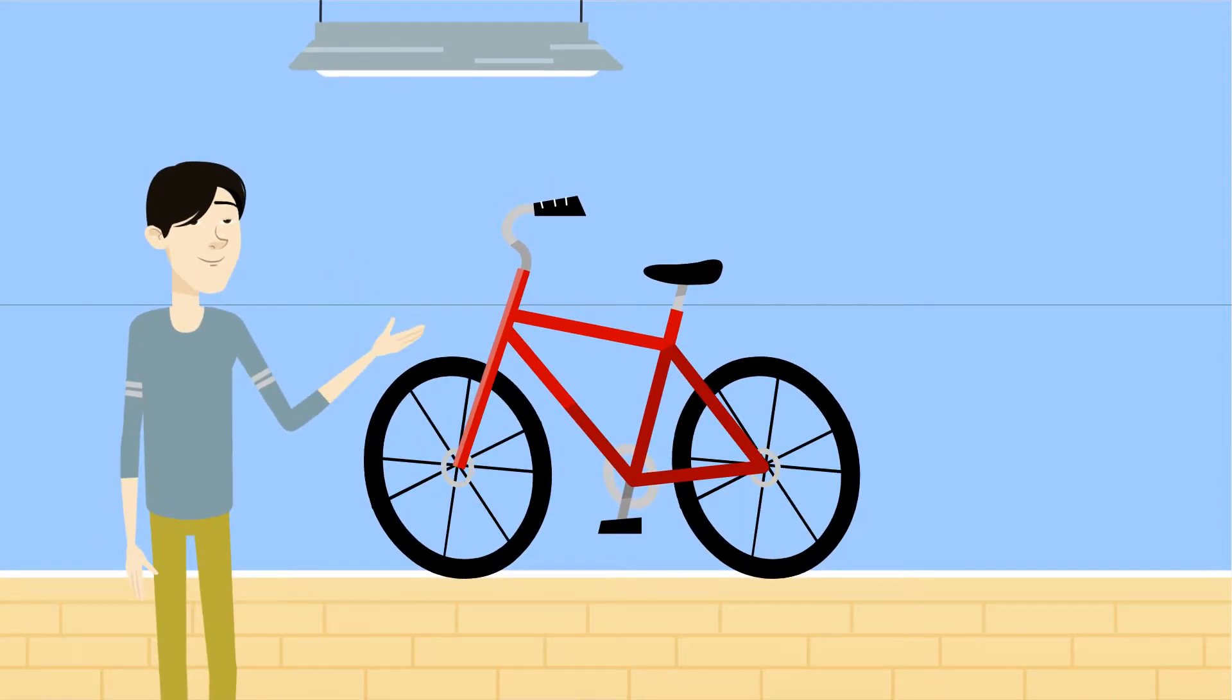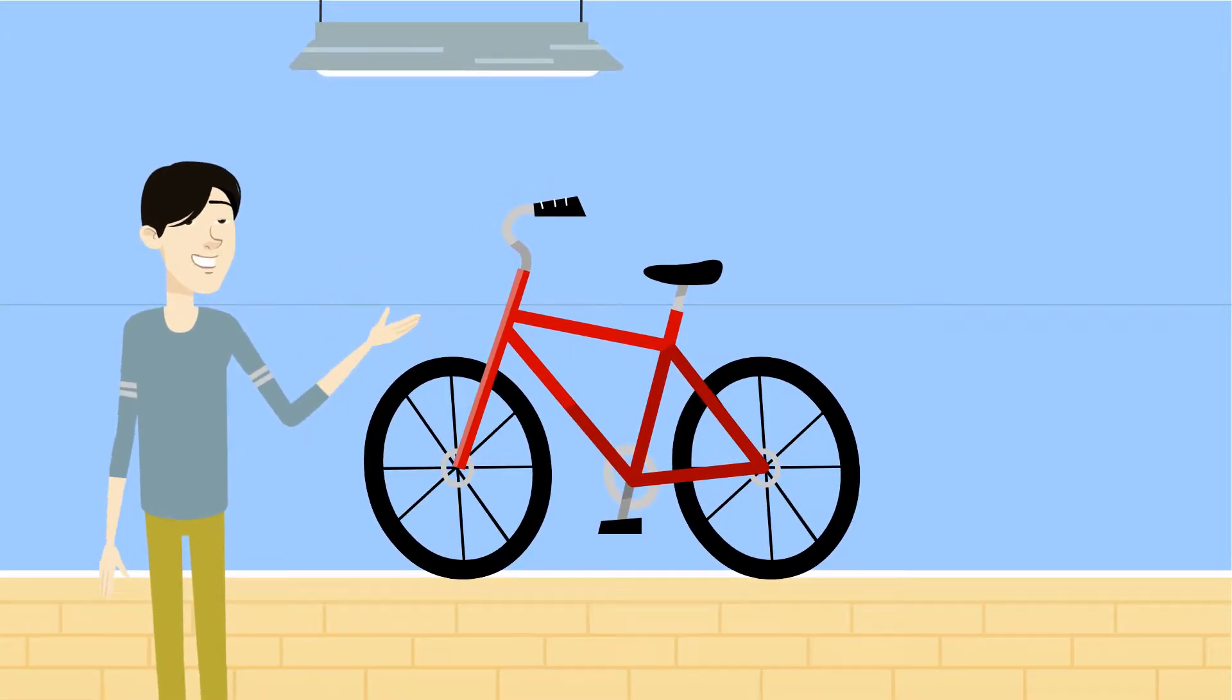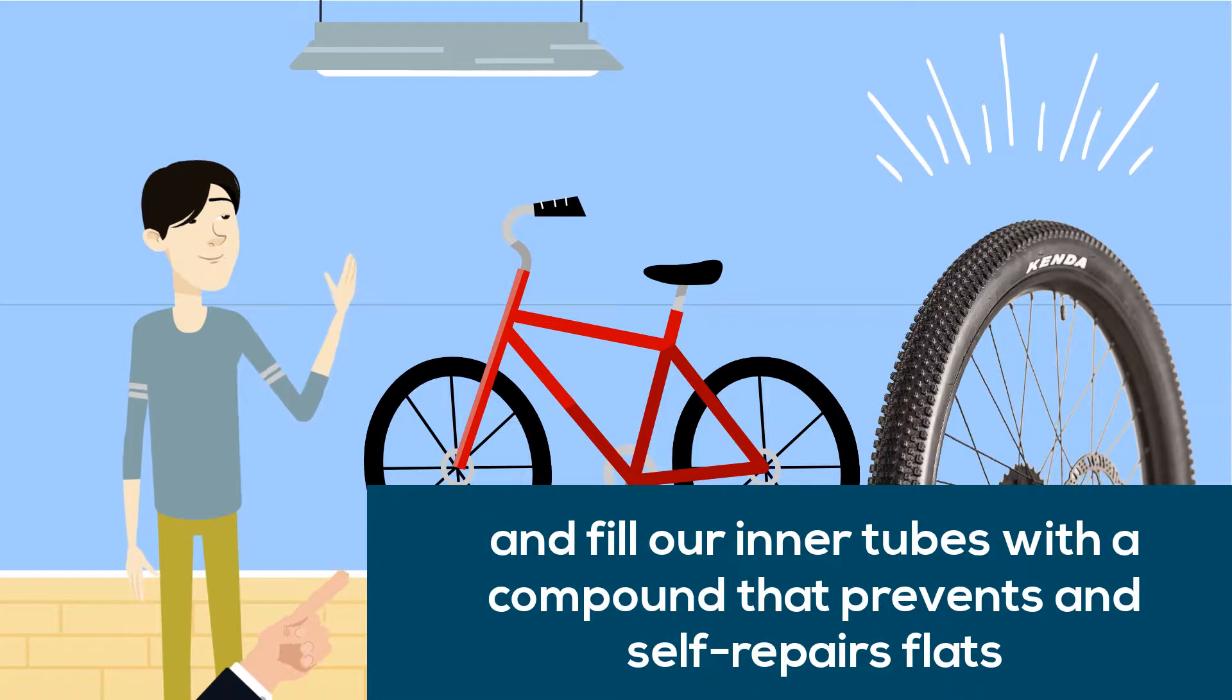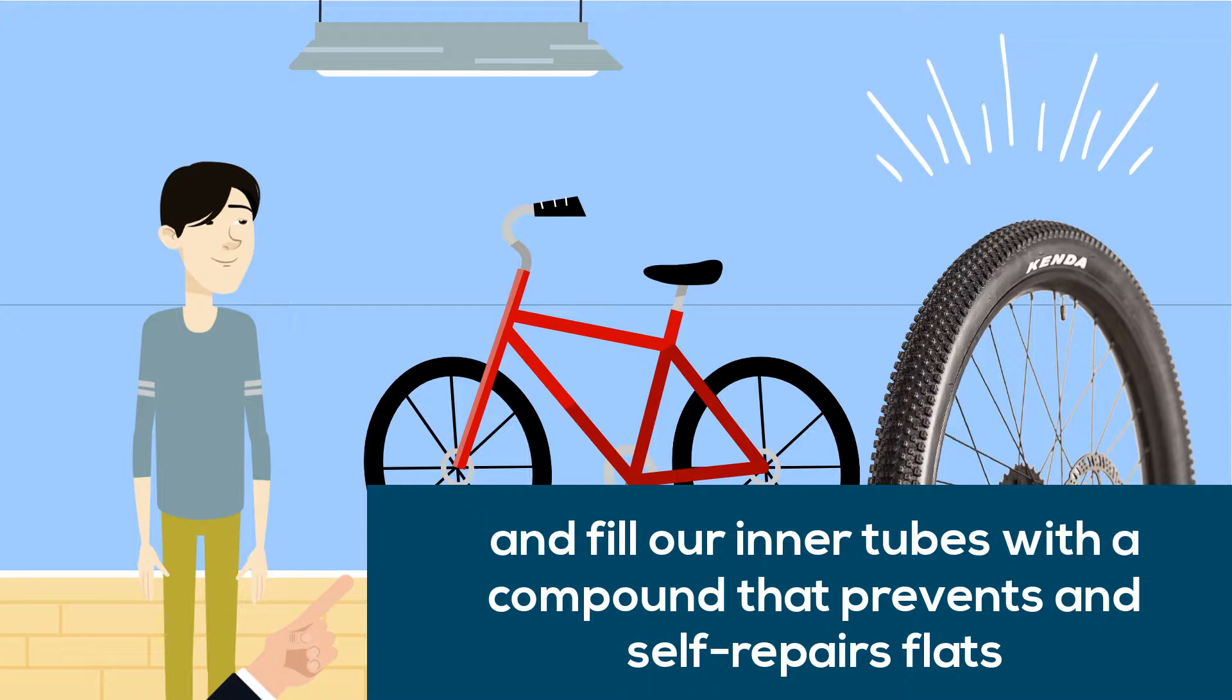Wheels are often a weak spot on less robust bikes. We use wide rims, stainless steel spokes which are much stronger than all steel spokes, high-thread count tires which are wide enough to provide comfort and suspension, and fill our inner tubes with a compound that prevents and self-repairs flats.